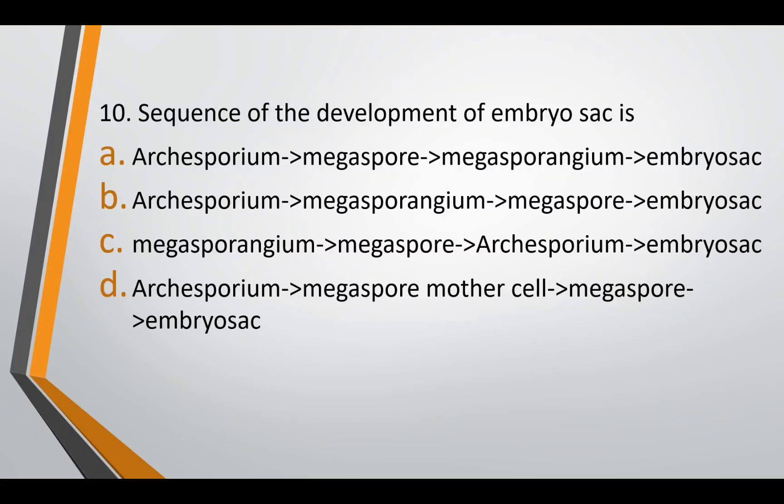Question ten: sequence of development of embryo sac — option A: archesporium → megaspore → microsporangium → embryo sac; option B: archesporium → microsporangium → megaspore → embryo sac; option C: microsporangium → megaspore → archesporium → embryo sac; or option D: archesporium → megaspore mother cell → megaspore → embryo sac. The correct answer is option D — that sequence is the correct development for the embryo sac.